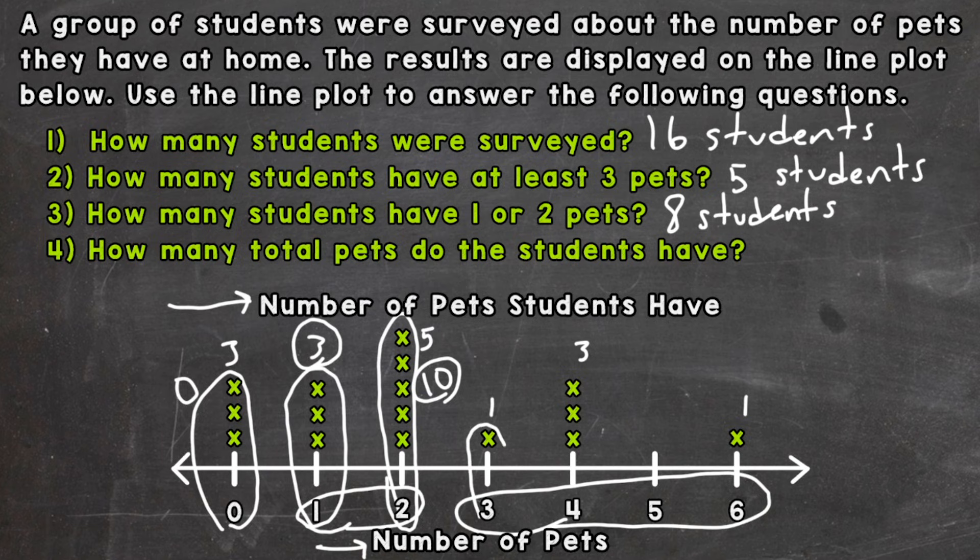Then for three pets, we have one student with three pets. So the value of that x in terms of pets is three. Four pets. Well, three students have four pets. So that's a total of 12. And then lastly, we have one student with six pets. So that holds a value of six.